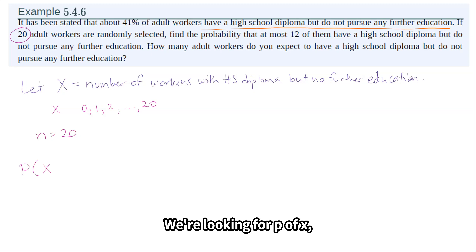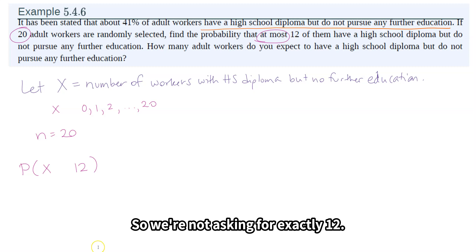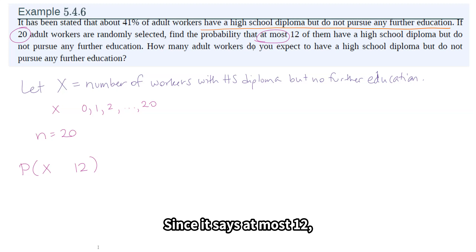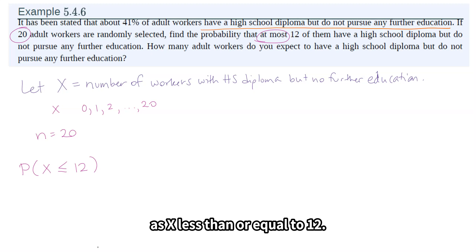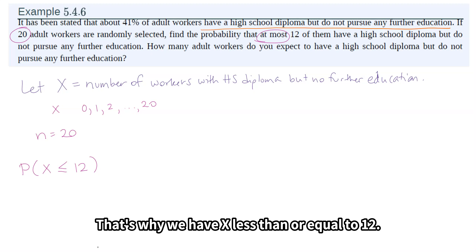We're looking for P(x) and something to do with 12. At most 12 means 12 is the largest number we can have. So we're not asking for exactly 12 — it would say exactly if we were looking for exactly 12. Since it says at most 12, 12 is the highest, so we're going to set up our inequality as x less than or equal to 12. At most 12, 12 is the largest but we could have less, and that's why we have x ≤ 12.